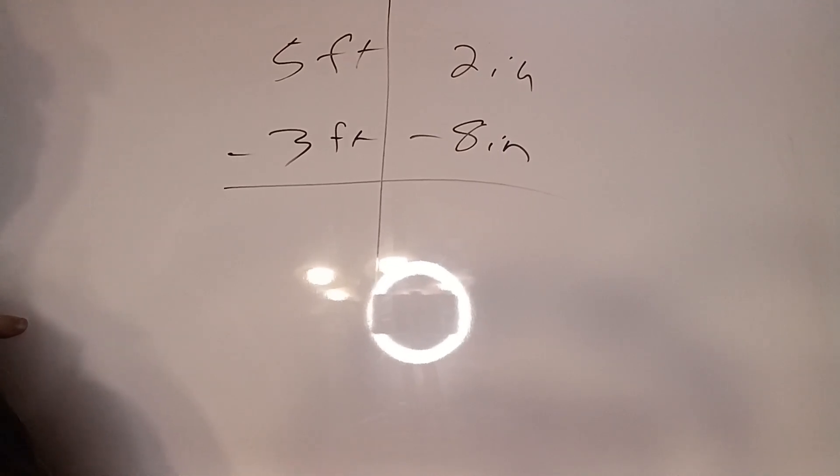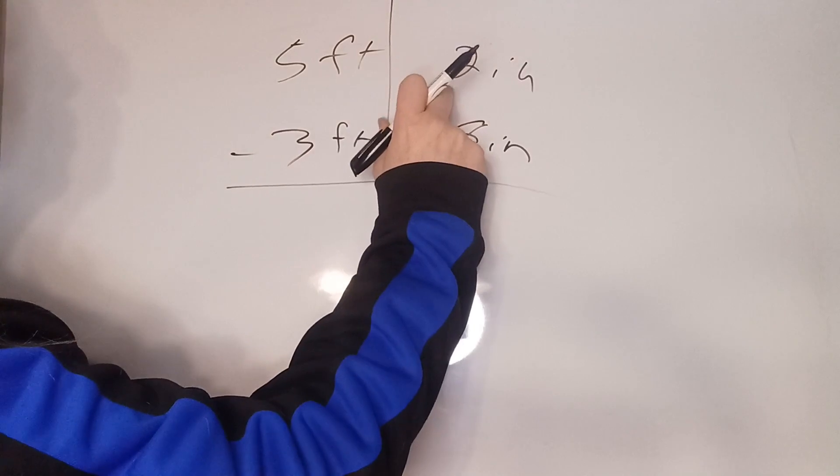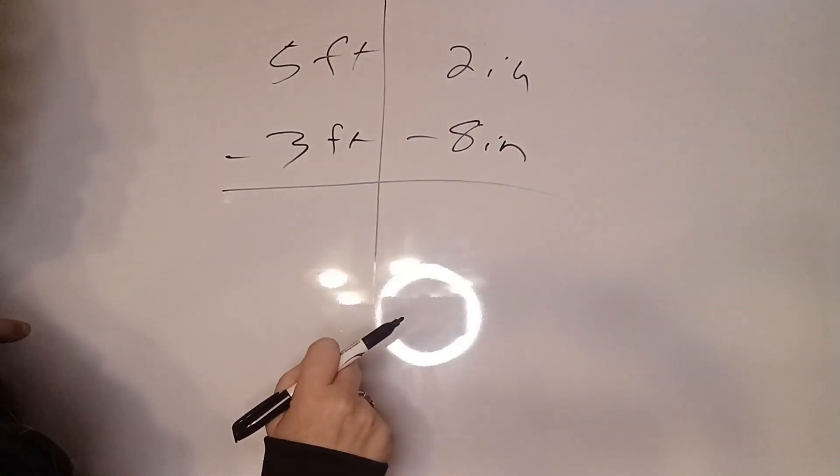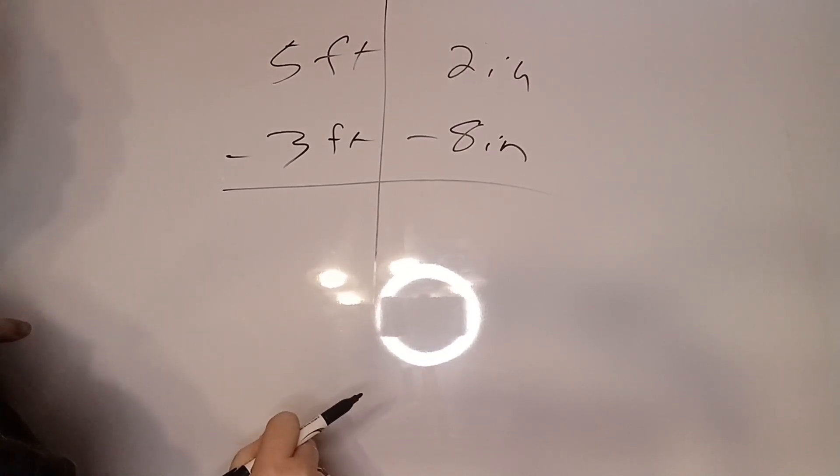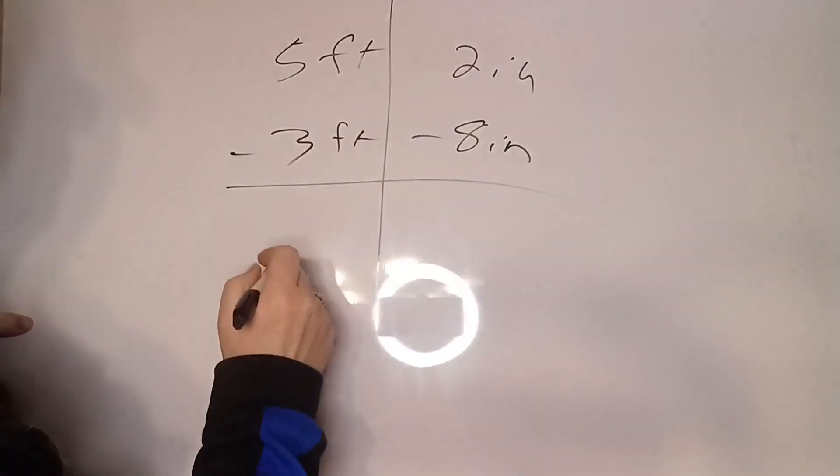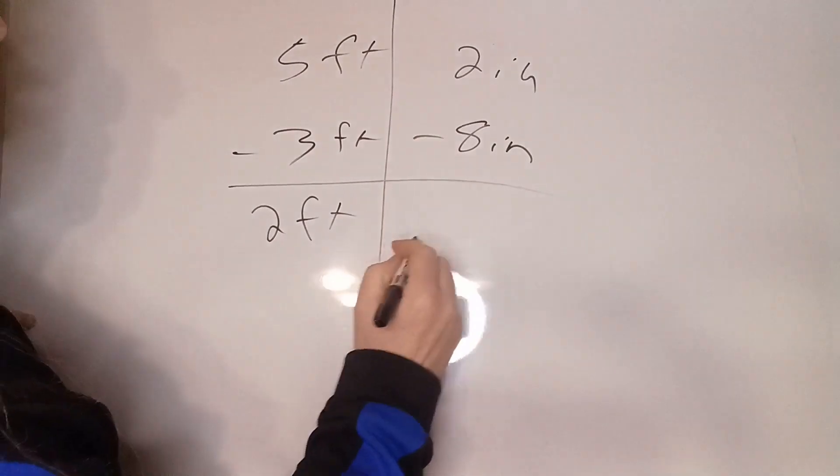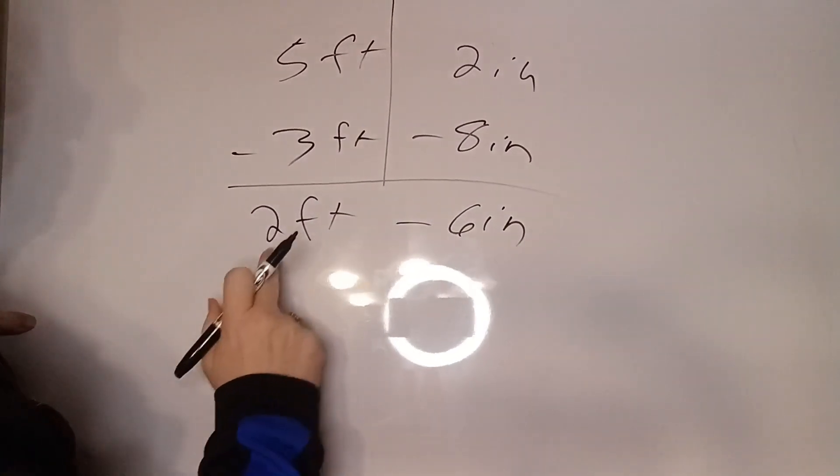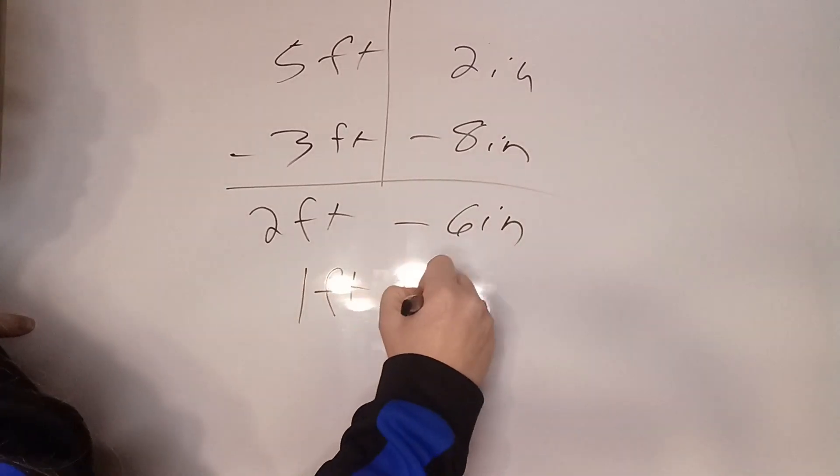Normally what we would do is we would cancel out this five, make it a four, and add 12 to the two, making it 14, and then subtracting the eight, making it six. But instead what we can do is five minus three is two feet, two minus eight inches is minus six inches, and then we do this math. Two feet minus six inches is one foot six inches.